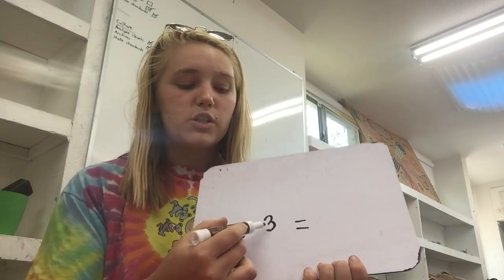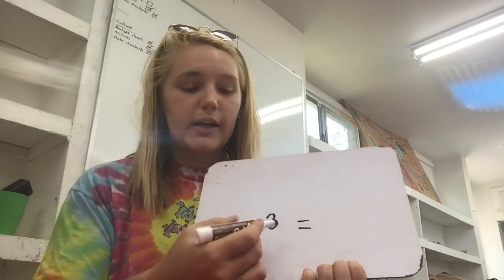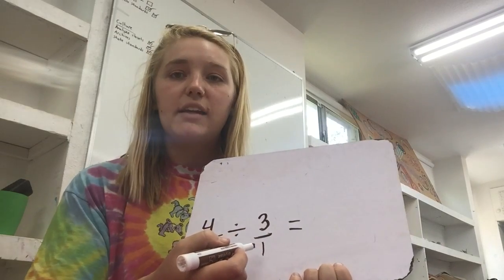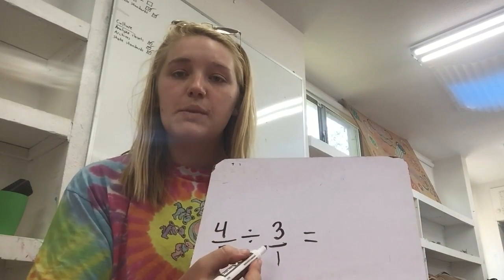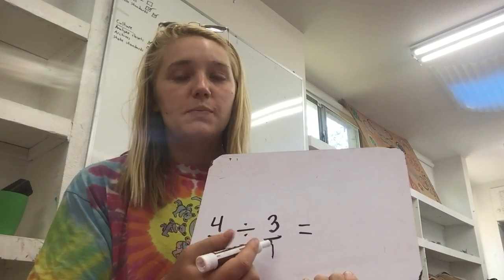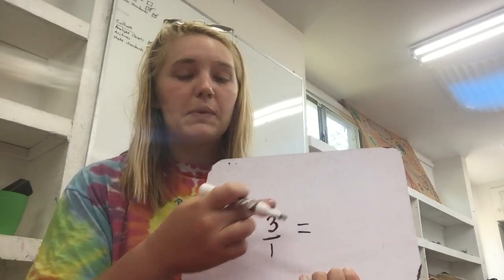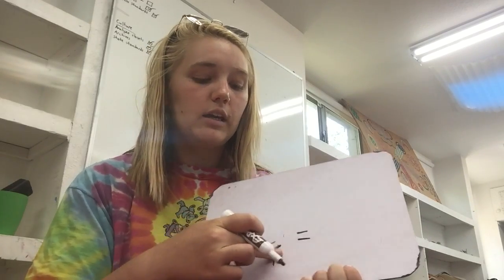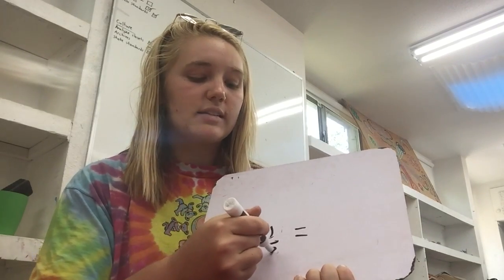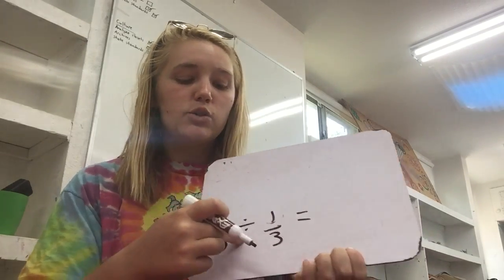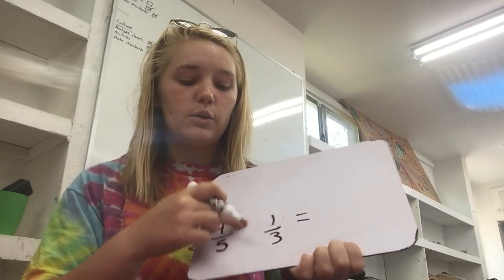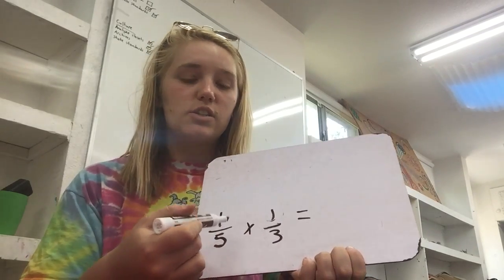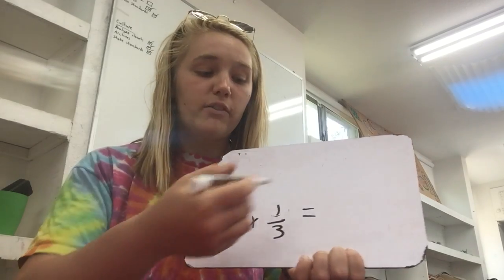What you must do is turn the whole number into a fraction, which would be three over one, and then you do the reciprocal of that, which just means to flip it. So instead of it being three over one, it would be one over three. Then there's one last step: you switch the division sign to a multiplication sign, and then it turns into the exact same problem that we did above.